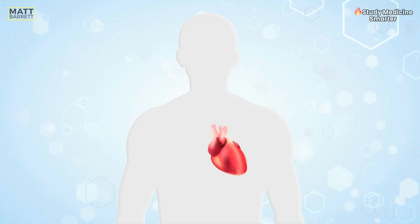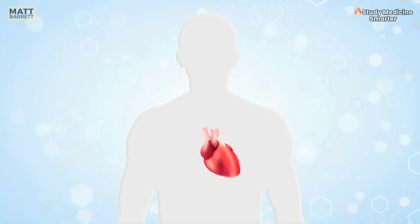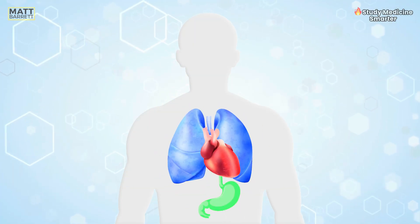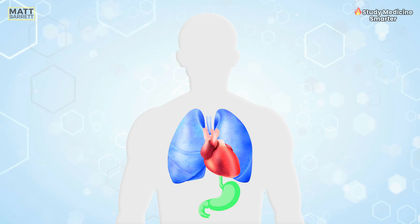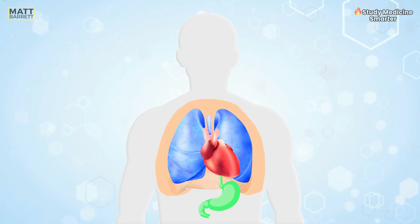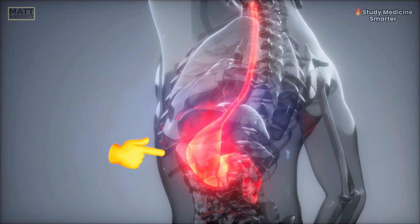To unlock our fast way to recall these differentials, we need to understand the fundamentals. Why do we even experience chest pain? Our chest cavity contains a bunch of organs, each with their own nerve supply — the heart, the great vessels, the lungs, the esophagus. Those are neatly contained from below by the diaphragm and from the outside by the ribs, the muscles and the skin. But even problems with the stomach can cause chest pain — how does that work?